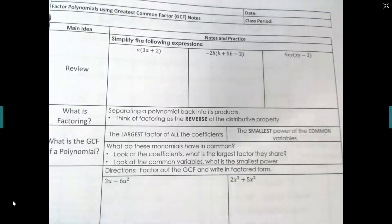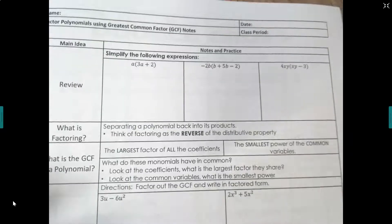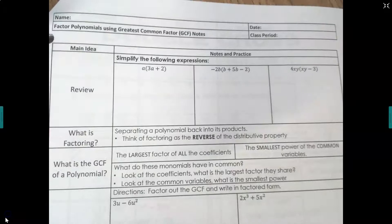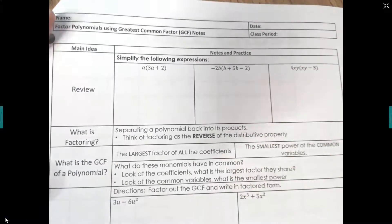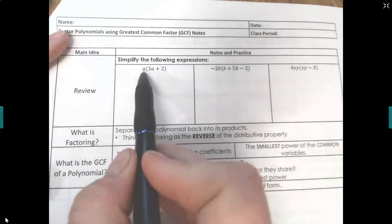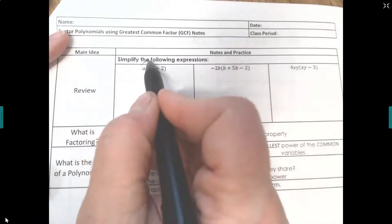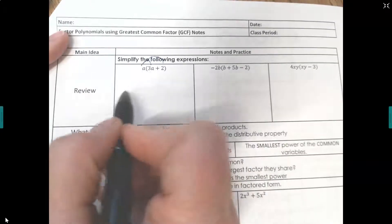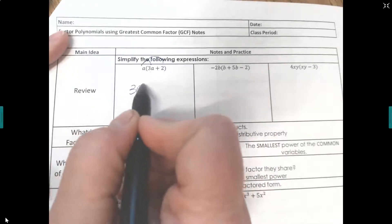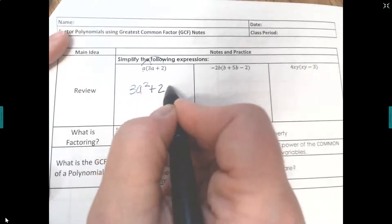Let's start with a little bit of a review. Previously, we've been given problems and told to simplify by distributing and combining any like terms. When you have a letter or number in front of a parenthesis, it means multiply it to everything inside. So a times 3a gives 3a squared, and a times 2 gives 2a.